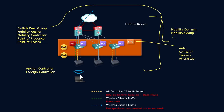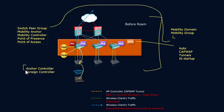When a client initially attaches to one of these devices, they've connected to an access point, which connects them to the wireless LAN controller. That initial wireless LAN controller is the point of presence and it is the point of access. At this point, it is also going to be referenced as the anchor controller, because this is what the client initially connected to.